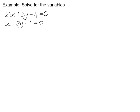Okay, so if we have a look at an example, solve for the variables. We've got 2x plus 3y minus 4 is equal to 0. Let's call that equation 1. And we've got x plus 2y plus 1 is equal to 0, and we're going to call that equation 2.